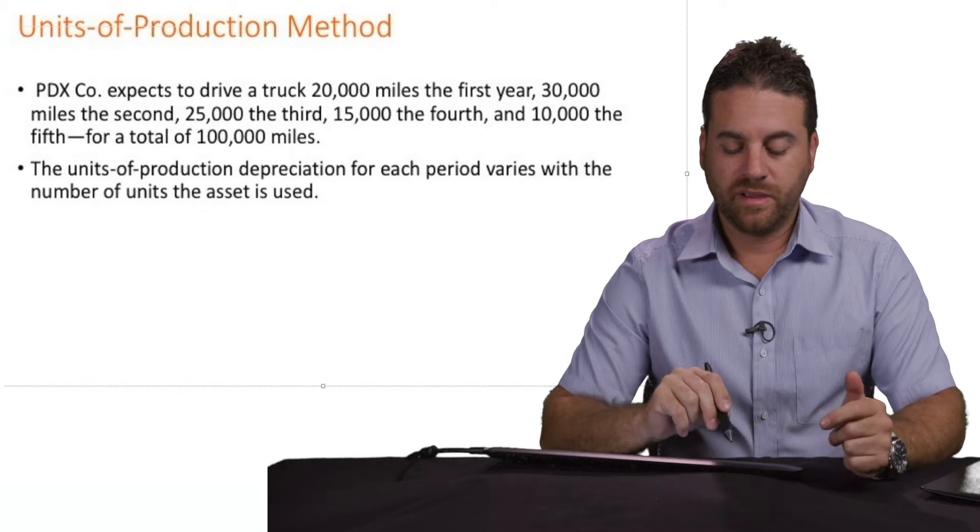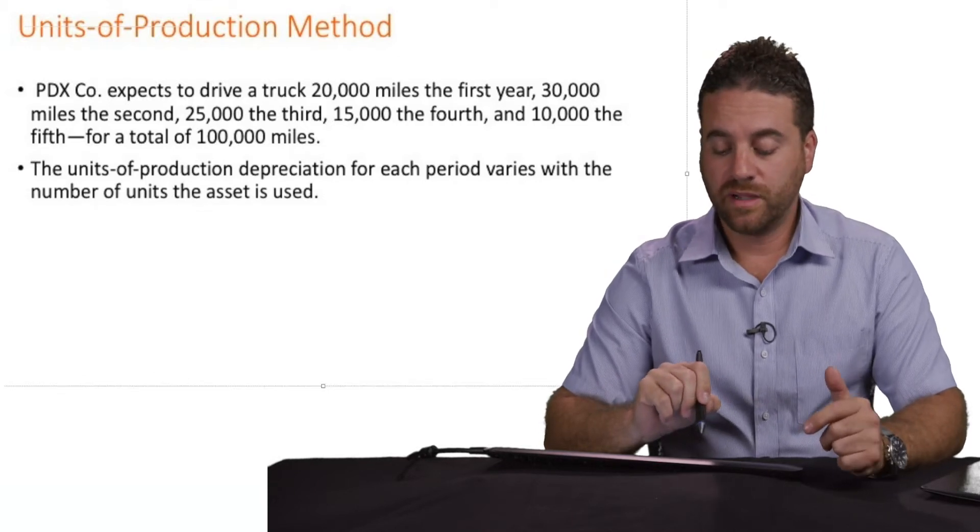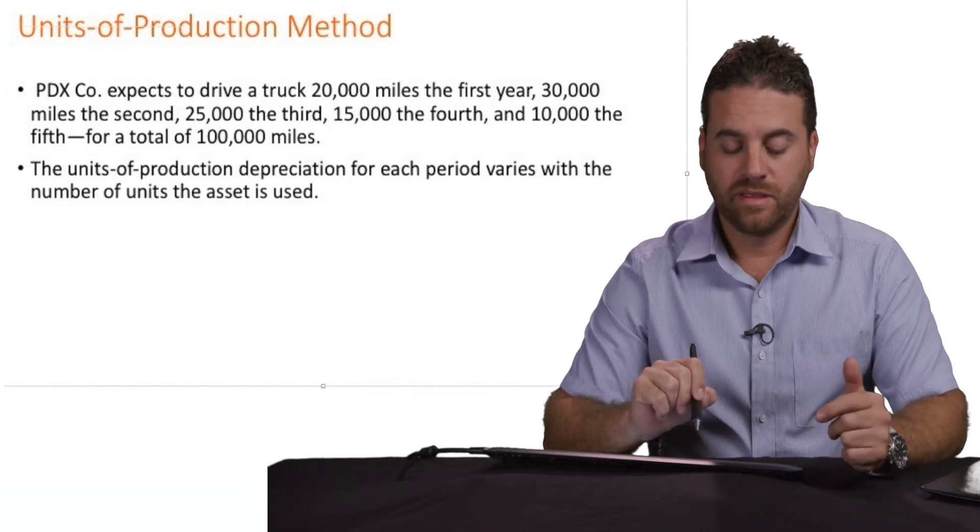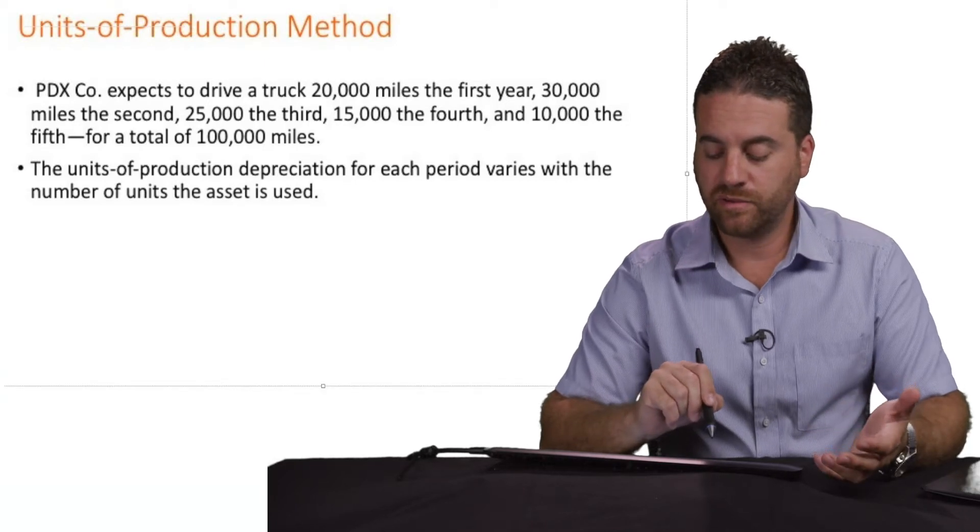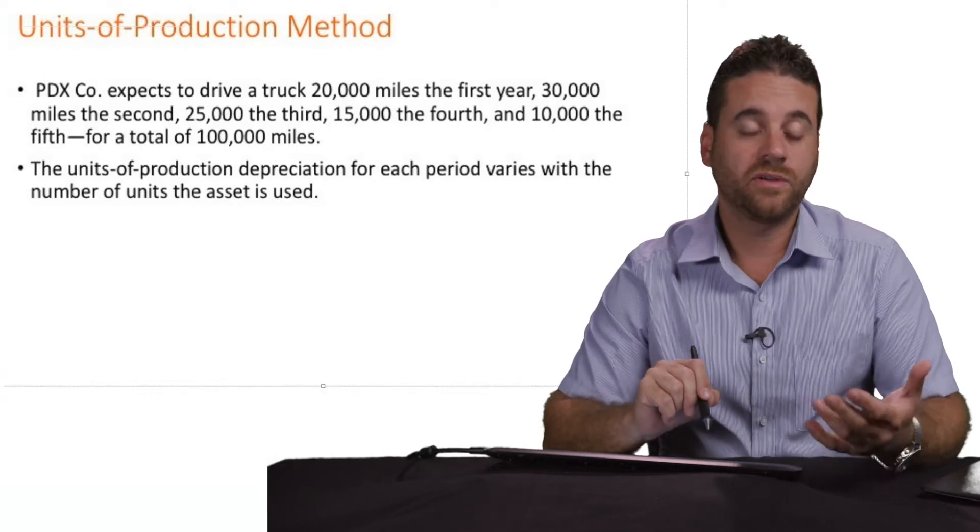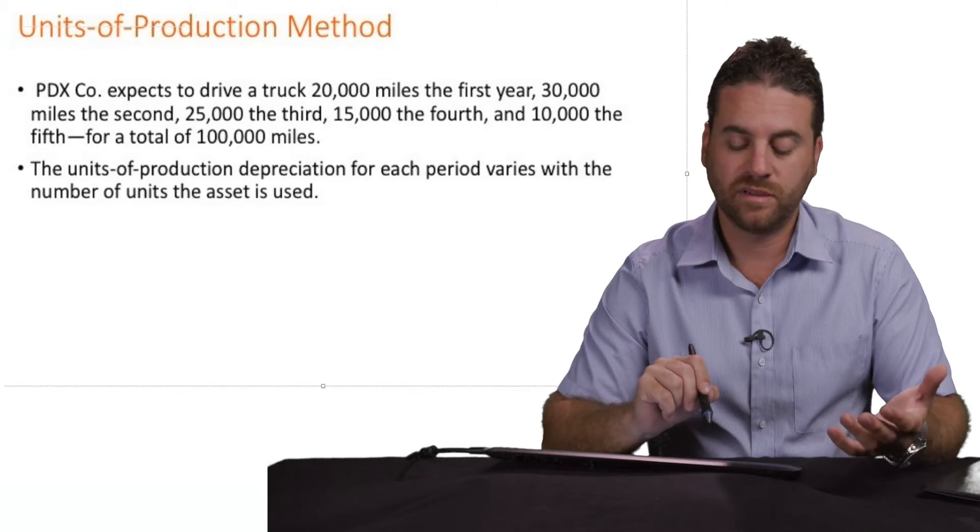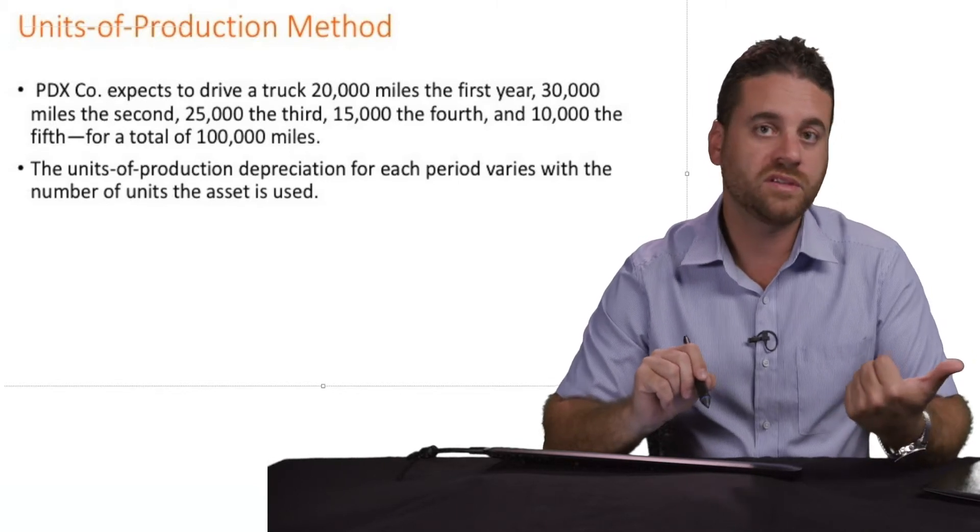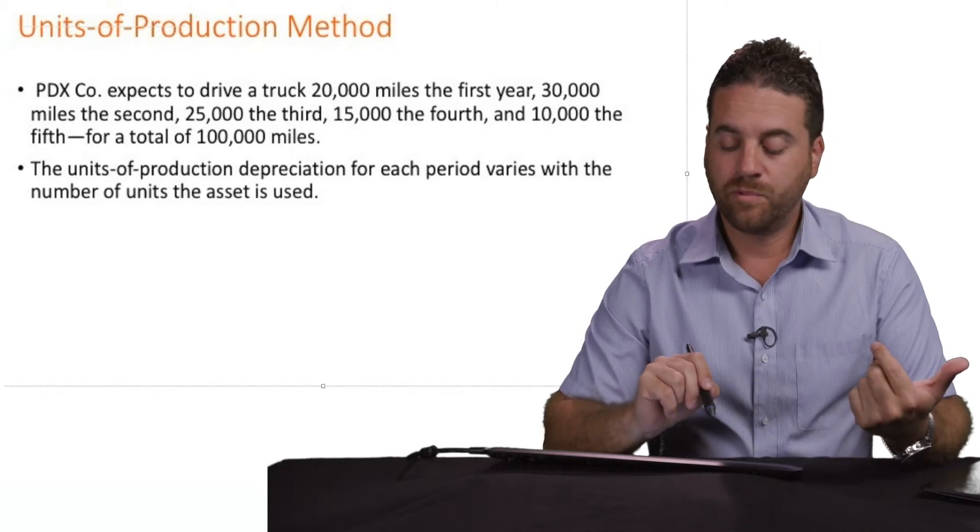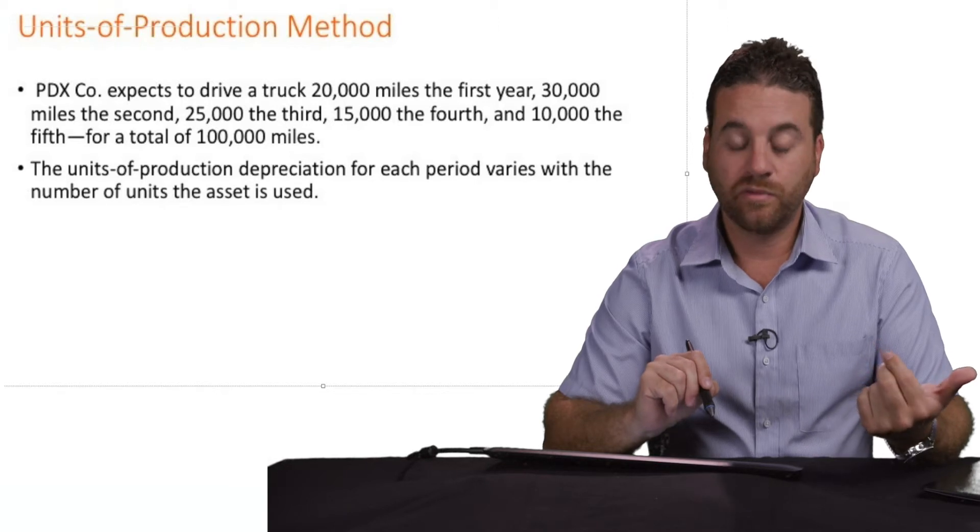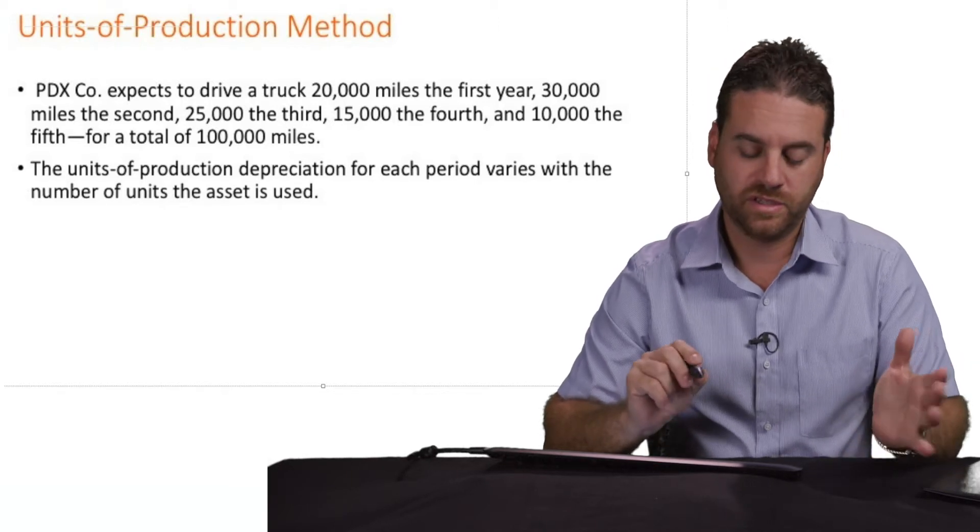We have PDS company expects to drive a truck 20,000 miles the first year, 30,000 miles the second year, 25,000 the third year, 15,000 the fourth year, and 10,000 in the fifth, for a total of 100,000 miles. So it does have a five-year useful life just like the previous example we had. We purchased it for $40,000 as well. We're not changing that fact.